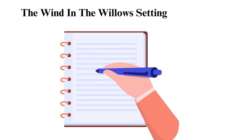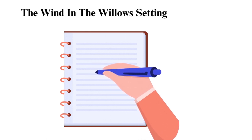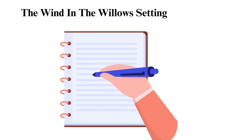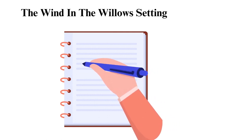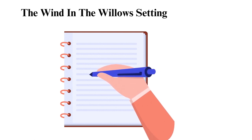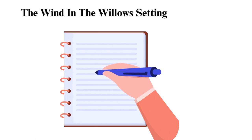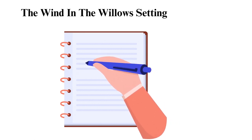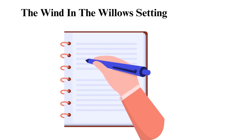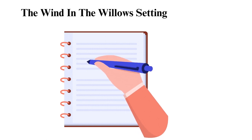The Wind in the Willows plot begins with Mole getting bored with his spring cleaning now that the weather has improved. He travels to the river and meets Rat, who invites him for a ride in his boat and later moves in with him. One day, they visit Toad Hall, where they find the friendly but obsessive Toad, who is now obsessed with motor cars after his horse-drawn caravan falls into a ditch when a motor car scares the horse.